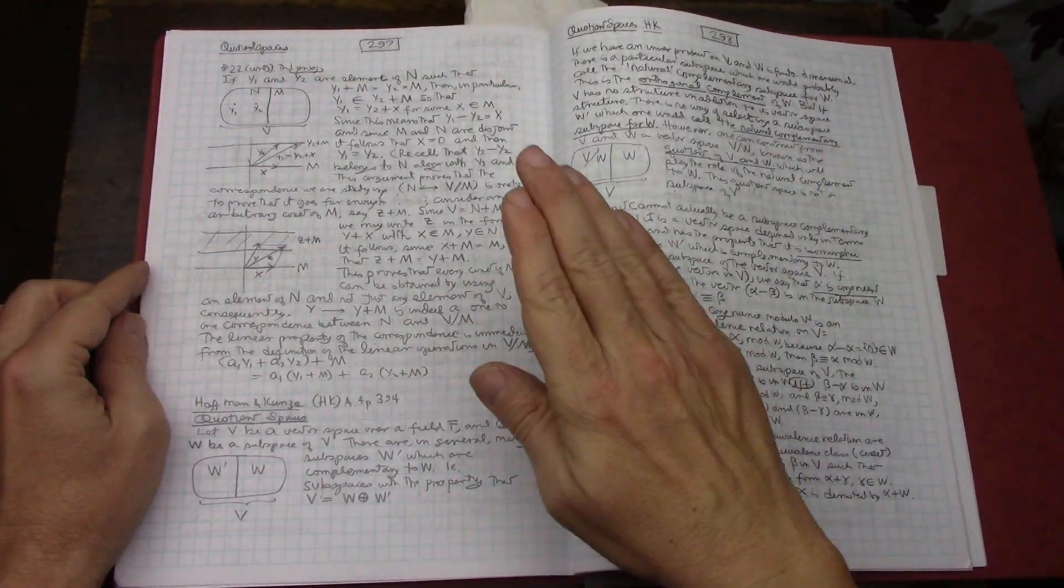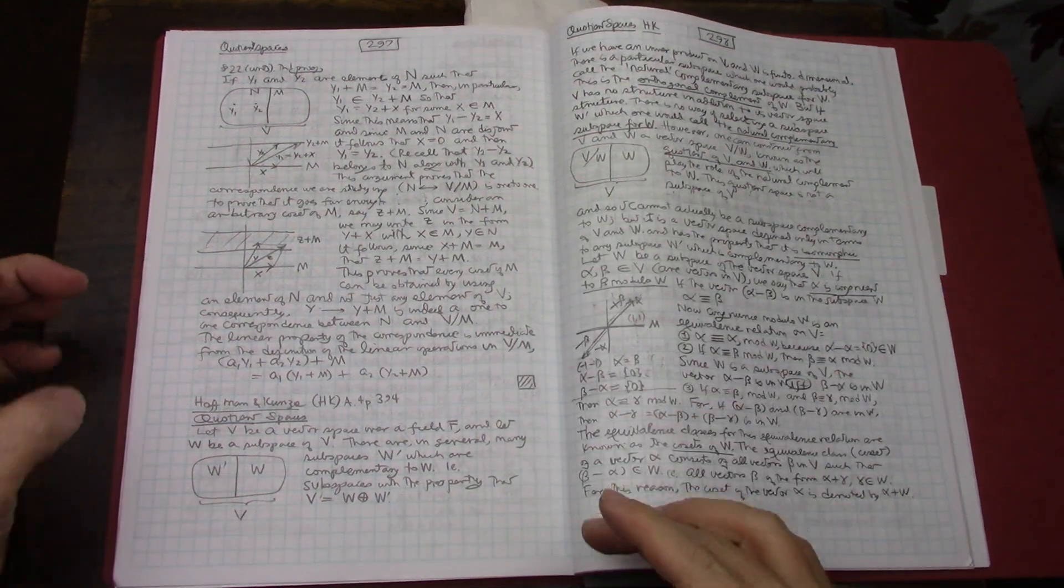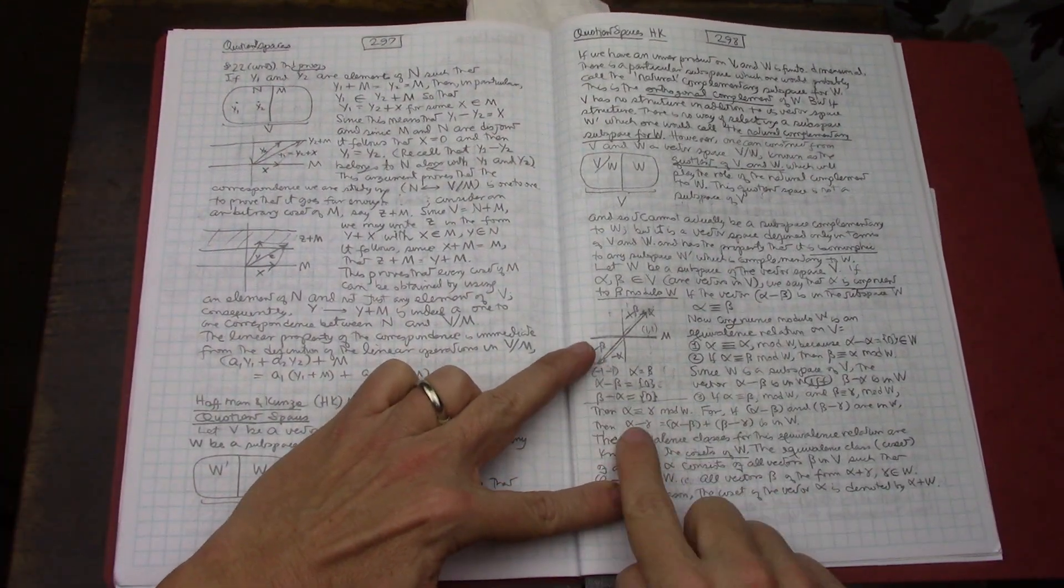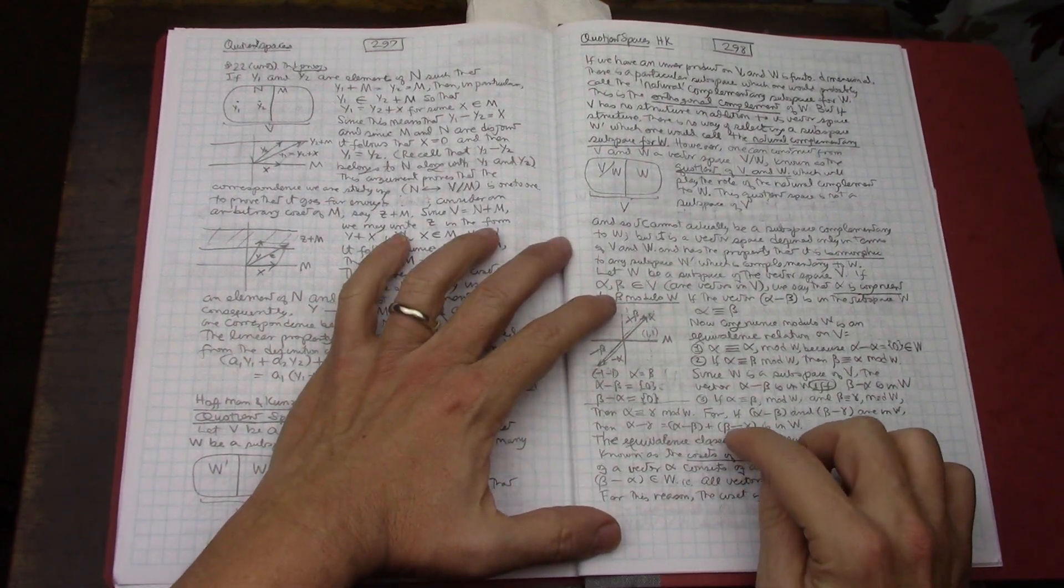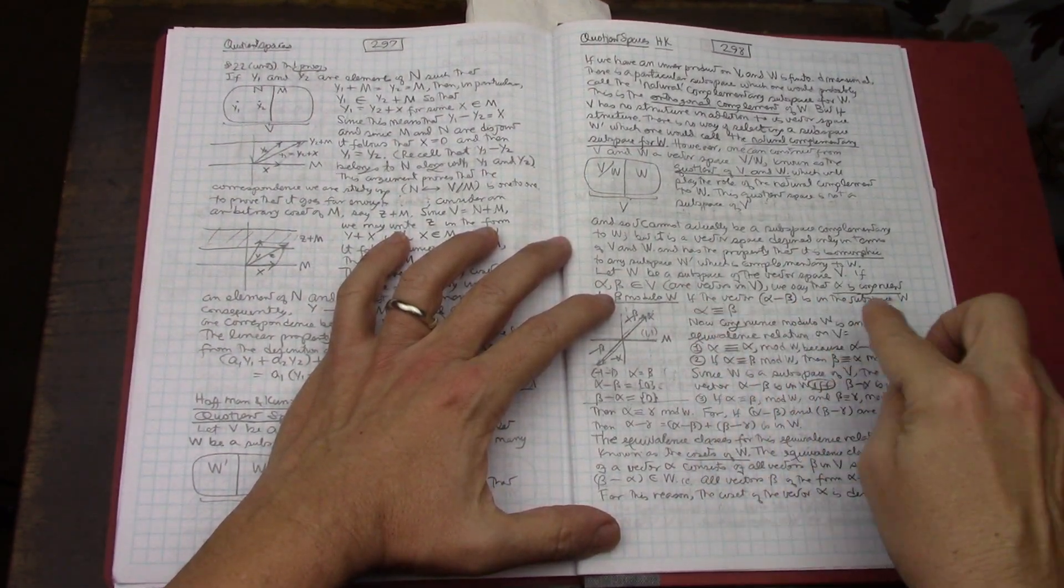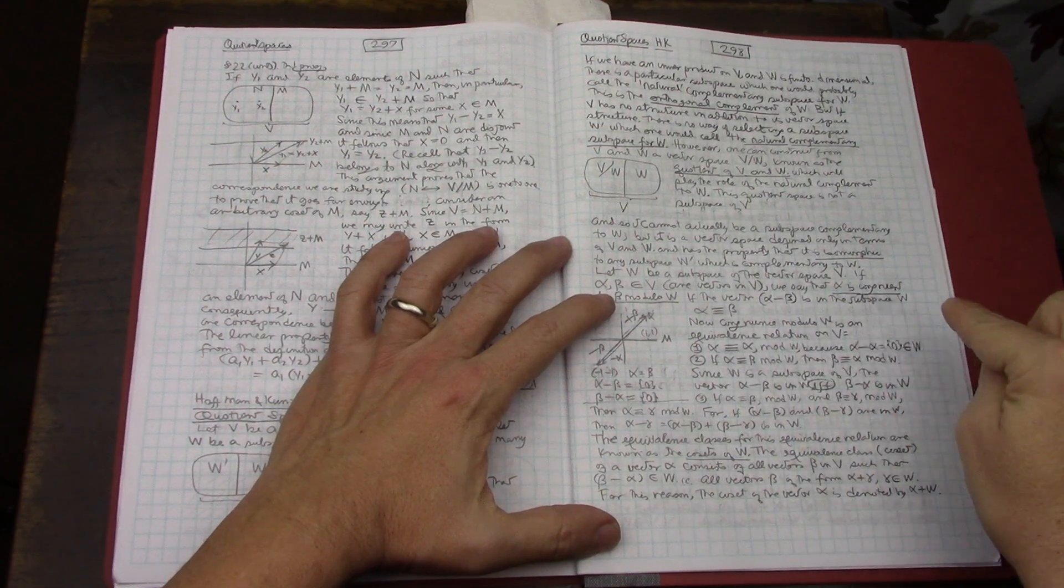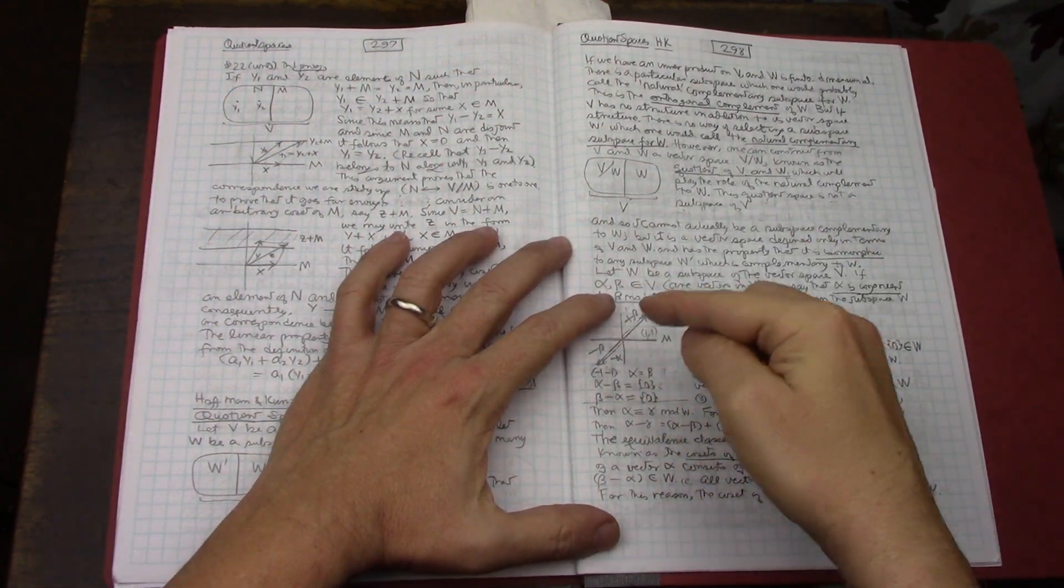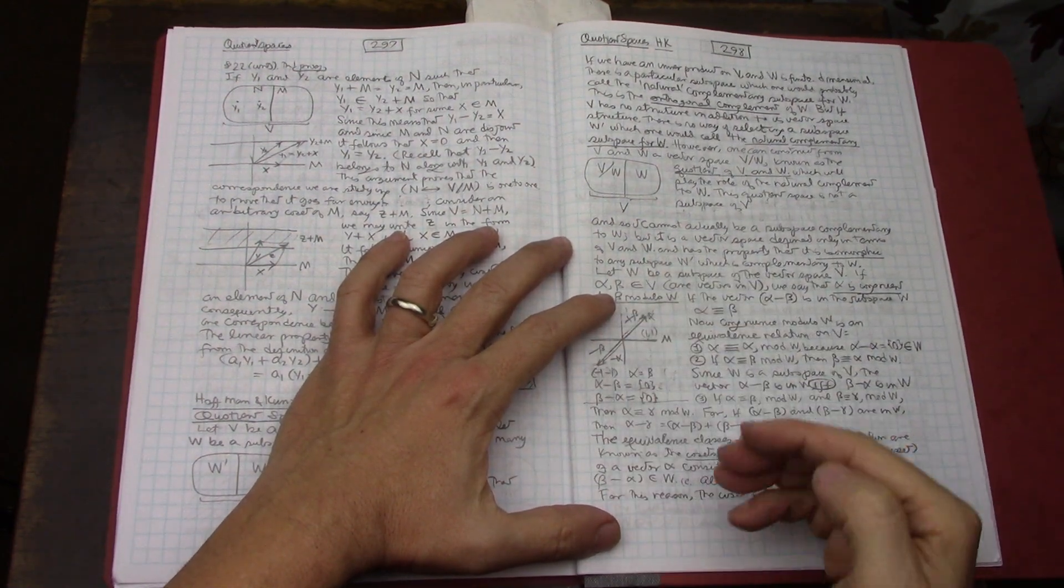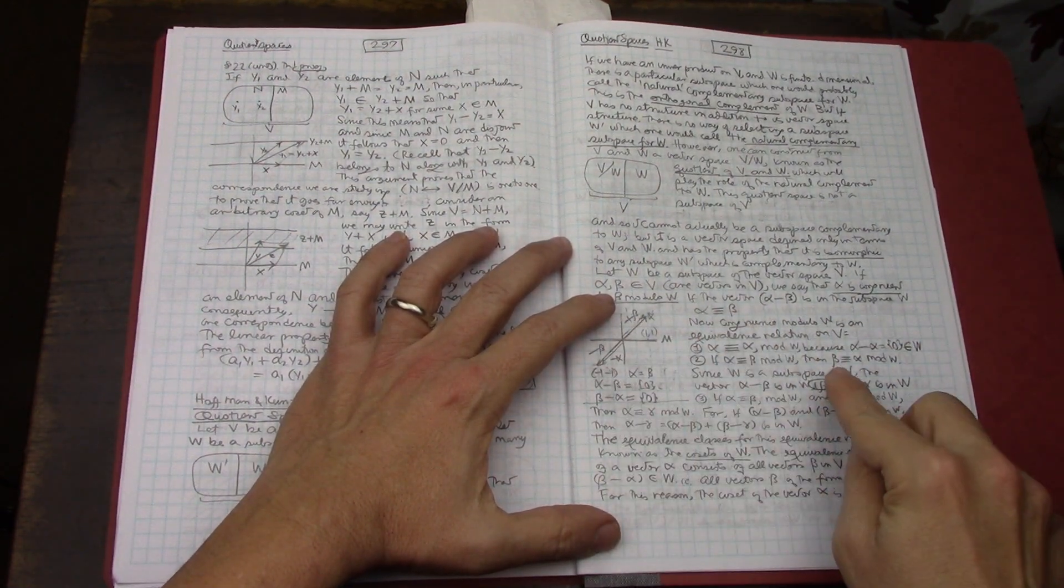And then looking forward to at some point doing Axler more. From Halmos, then Hoffman Kunze uses congruences because the classes for example mod 4, 0 is 0, 4, 8, minus 4, then when you go to 1, 2, and 3 those are all cosets and they don't include 0.